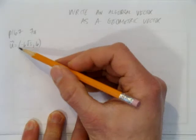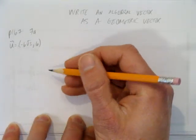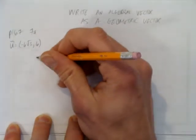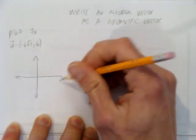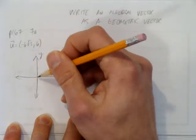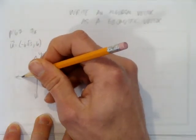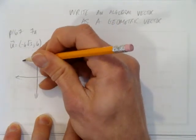The algebraic vector is vector u equals negative 6 root 3 comma 6. The first thing we want to do is set up our x and y axis. Then we want to draw it in the right quadrant. Negative 6 root 3 means go left on the x axis, and 6 means go up on the y axis.